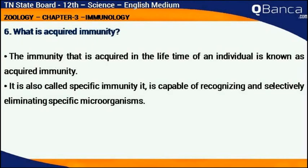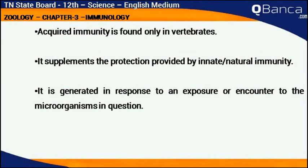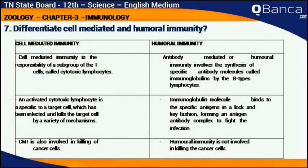What is acquired immunity? The immunity that is acquired in the lifetime of an individual is known as acquired immunity. It is also called specific immunity. It is capable of recognizing and selectively eliminating specific microorganisms. Acquired immunity is found only in vertebrates. It supplements the protection provided by innate or natural immunity and is generated in response to an exposure or encounter with the microorganisms in question.